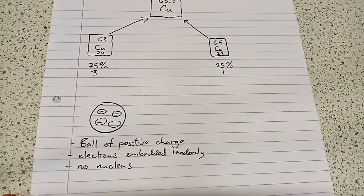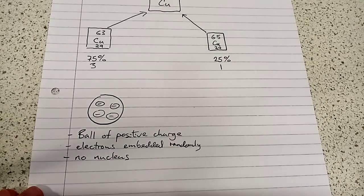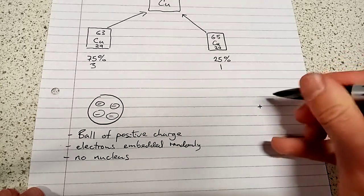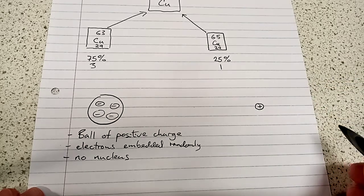Now, over time, many scientists worked on developing the model of the atom. And eventually, we came to the nuclear model. Now, in the nuclear model, things are slightly different.